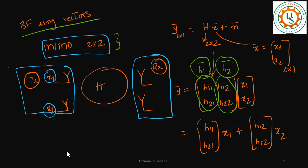Hey guys, welcome back. This is the sixth video in this playlist related to beamforming. Initially I started with the introduction and basics of beamforming, then moved to beamforming using vectors where I considered MIMO 2x2 — two transmit antennas, two receive antennas. x1 is transmitted along antenna 1, x2 is transmitted along antenna 2. The goal in this MIMO is that at the receiver side, on antenna number one I should get only x1.